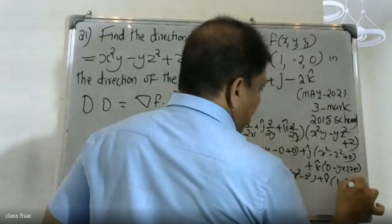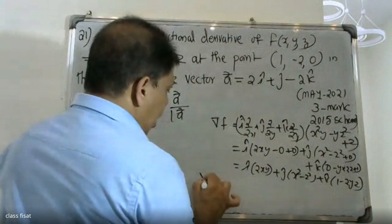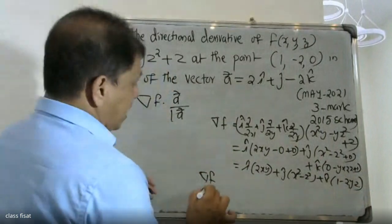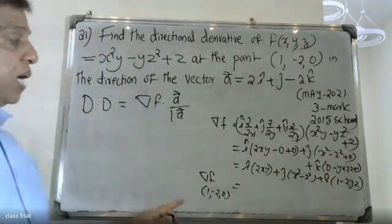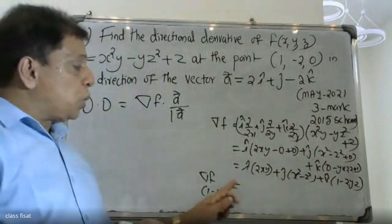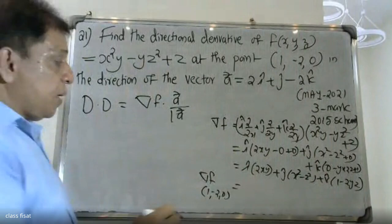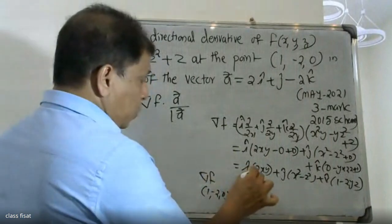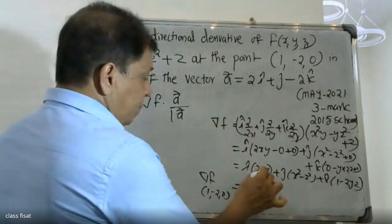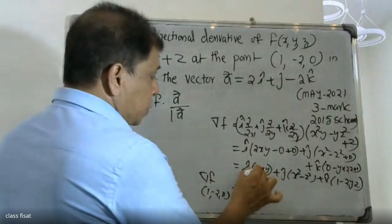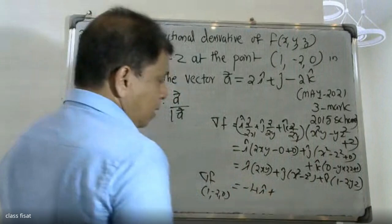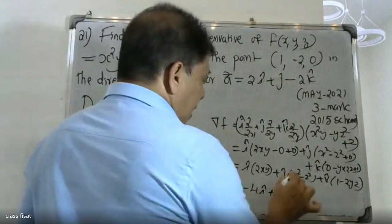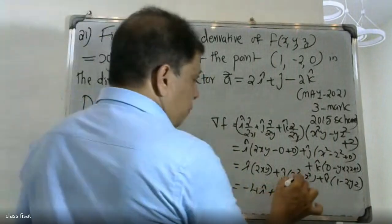At the point (1, -2, 0): i gets 2(1)(-2) = -4. j gets (1)² - (0)² = 1. k gets 1 - 2(-2)(0) = 1. So we have -4i + j + k.